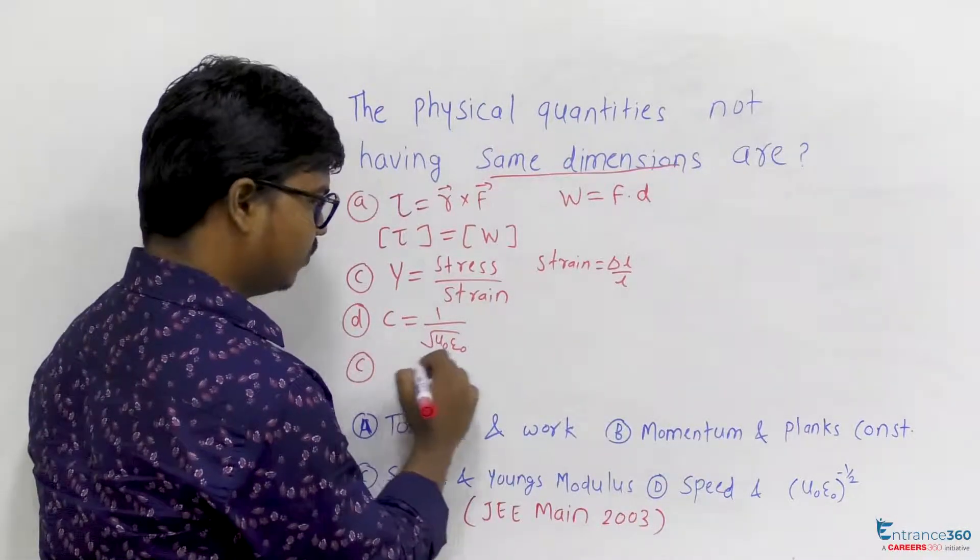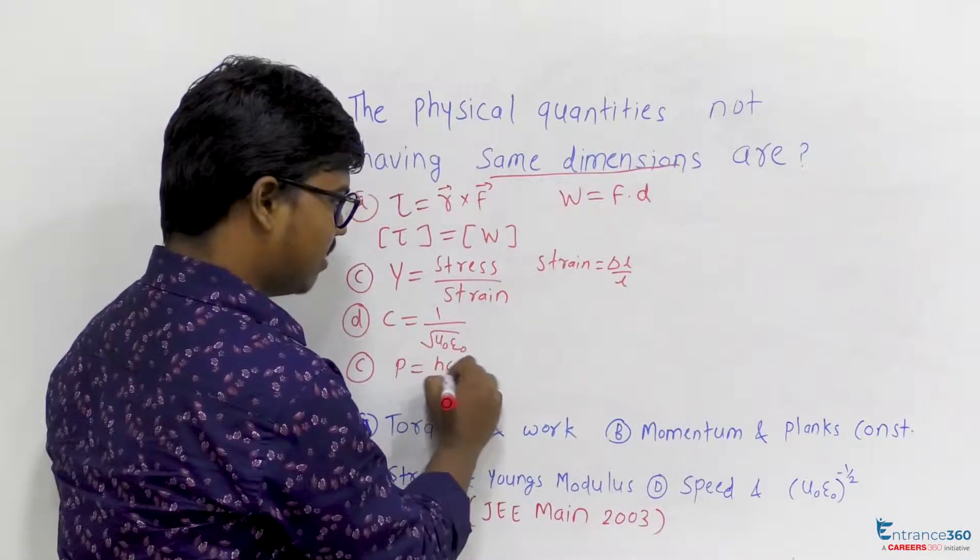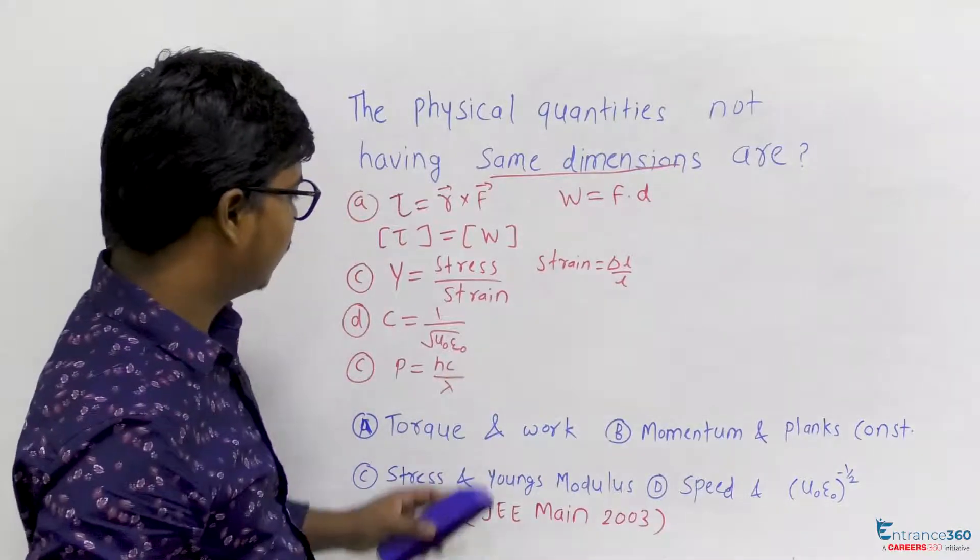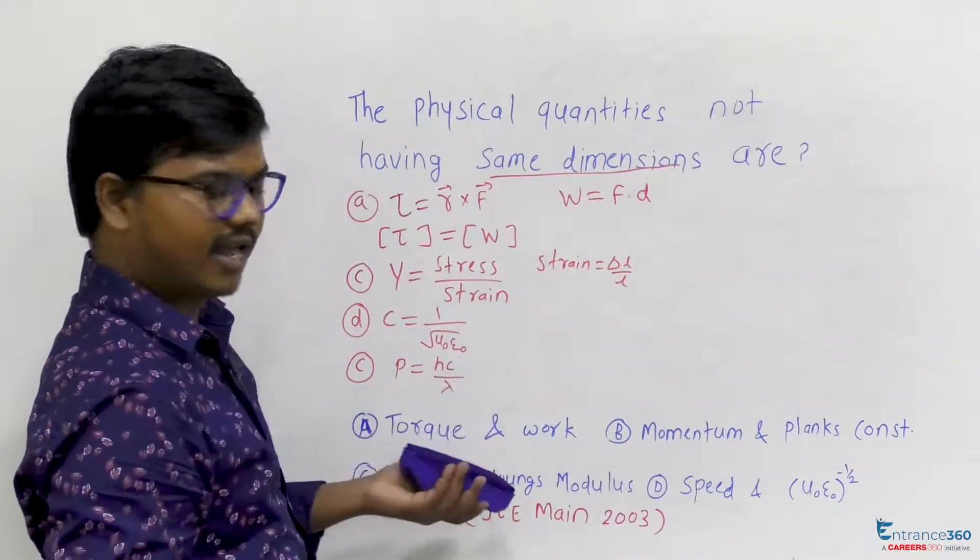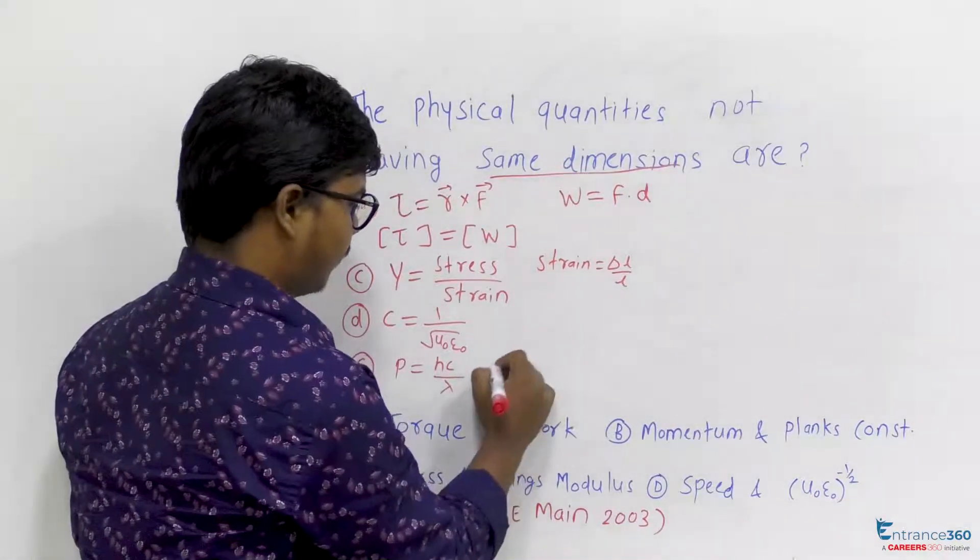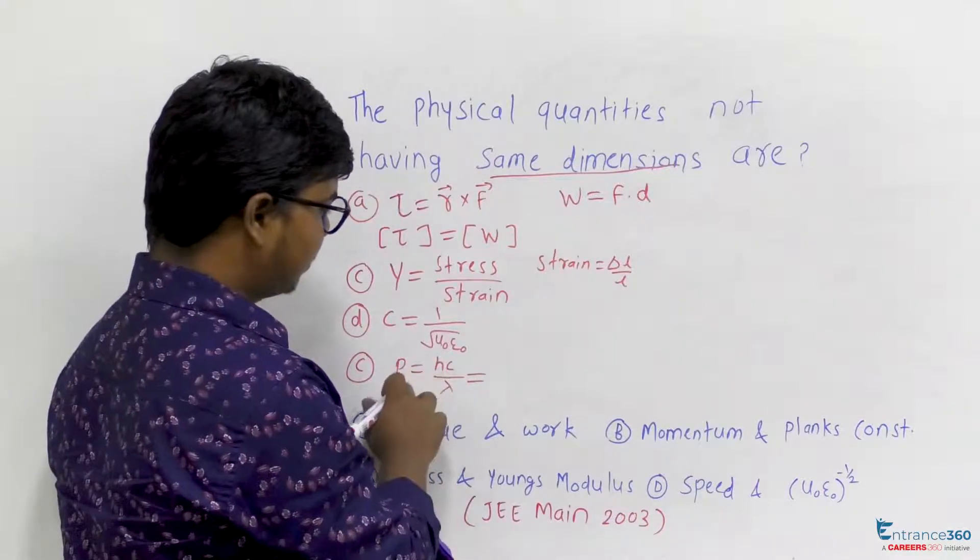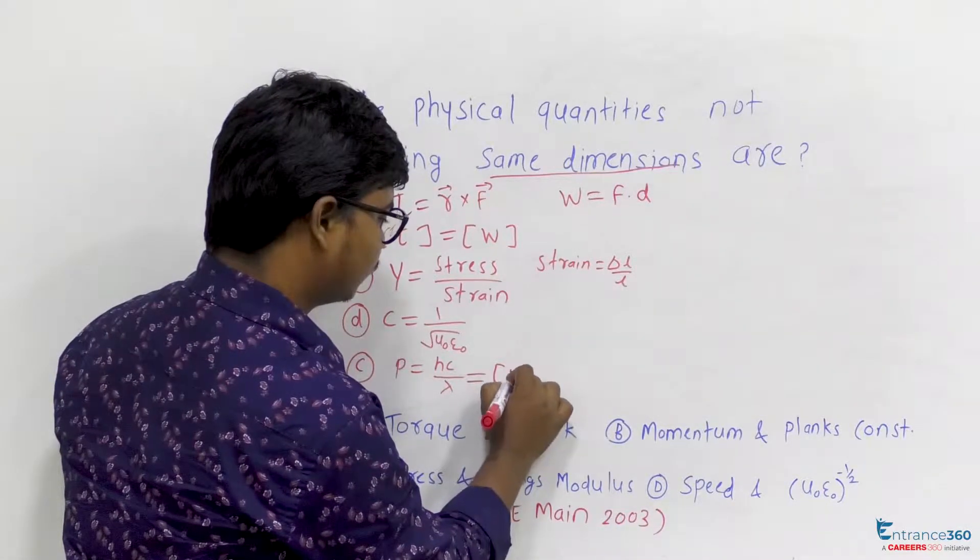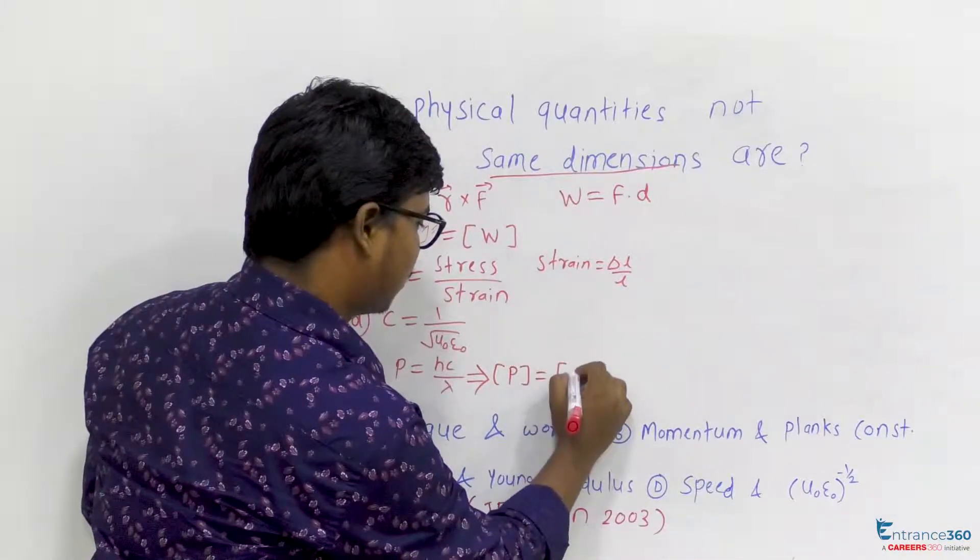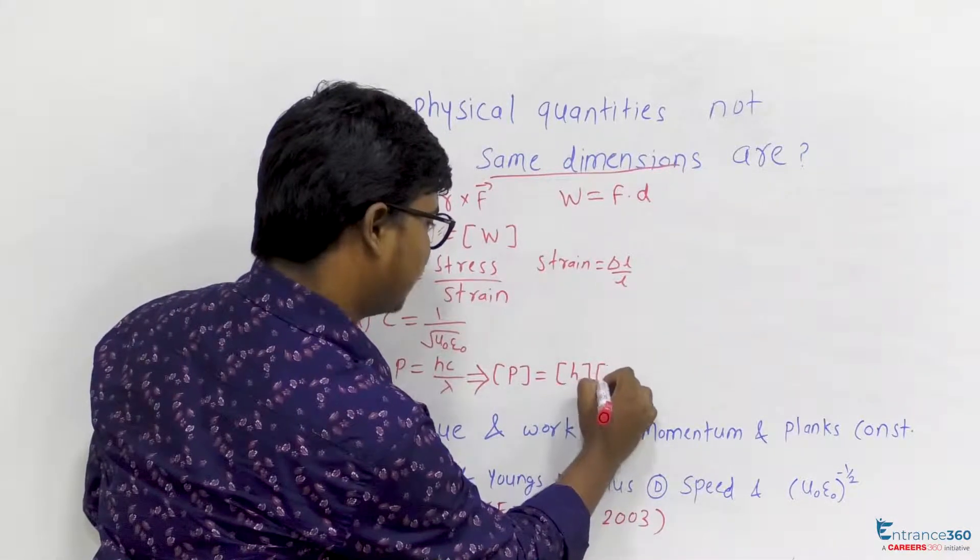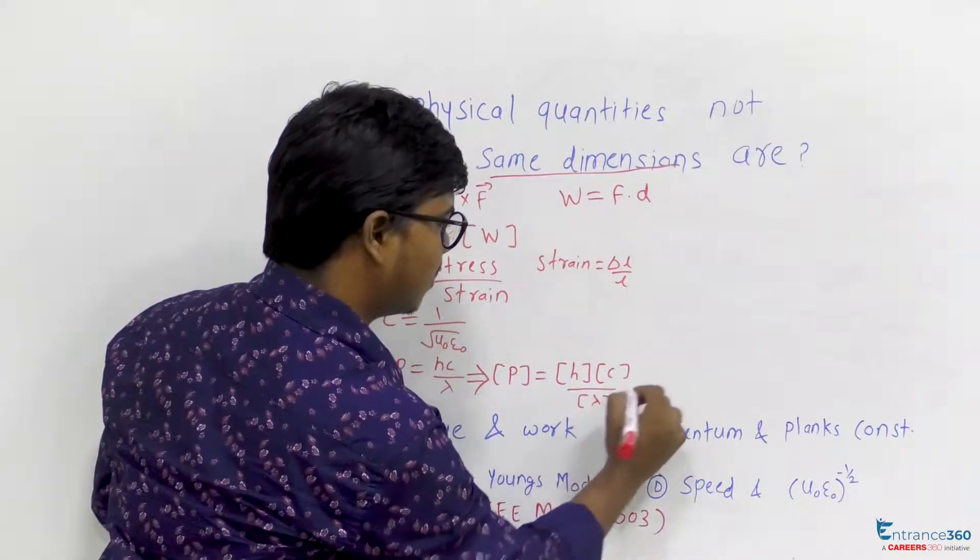Momentum is given as hC by λ. As we all know, C is velocity and λ is length. So momentum will have dimension which is equal to dimension of H into dimension of C upon dimension of λ.